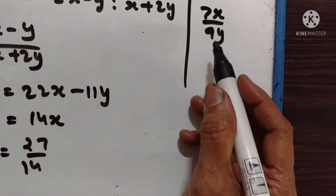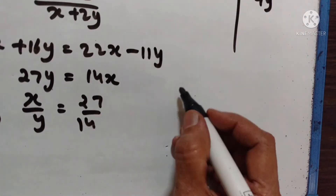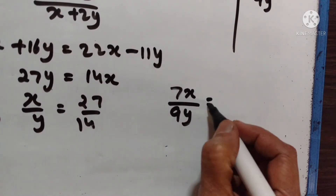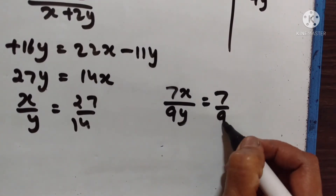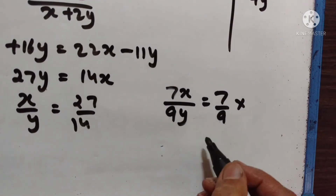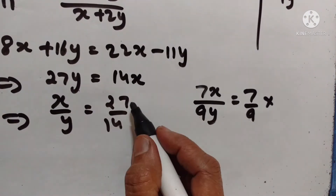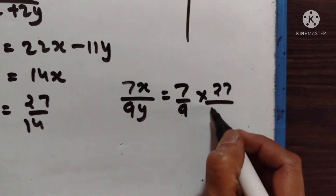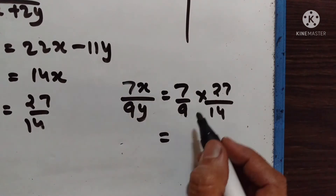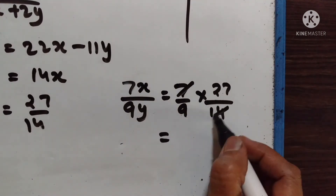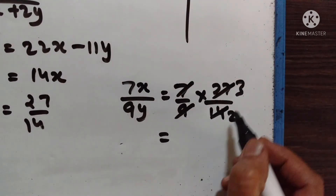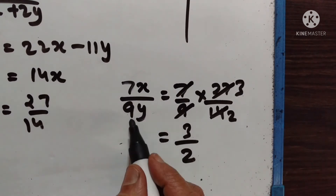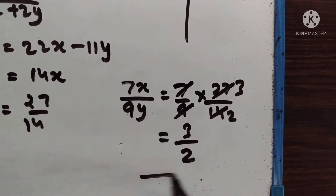We have to find the value of 7x upon 9y. So 7x upon 9y is equal to 7 upon 9 into x upon y, which is 27 upon 14. Therefore, 7x upon 9y is equal to 3 upon 2.